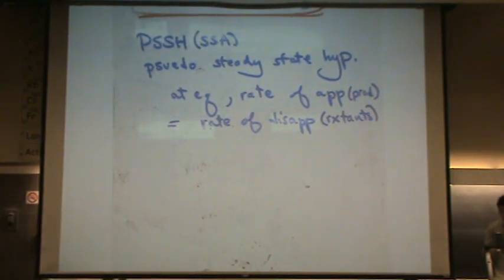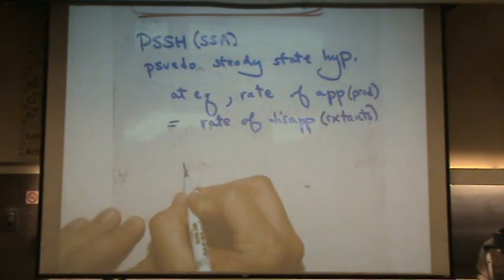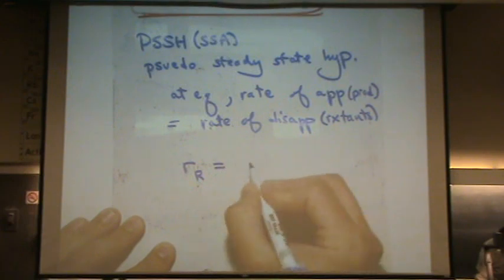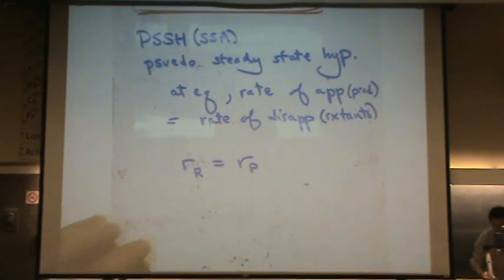I don't have too much to say about it, except that you're basically going to look at the intermediate and say, okay, the rate that I see it—I'll just put R for reactants—equals the rate of appearance in the product.